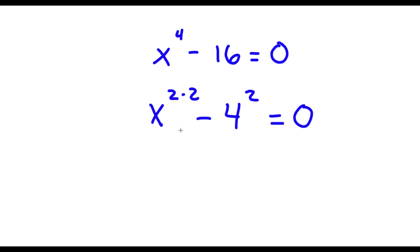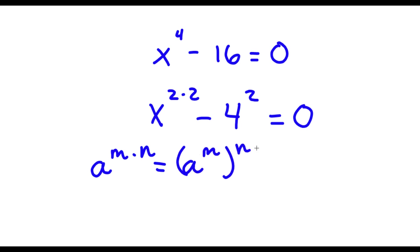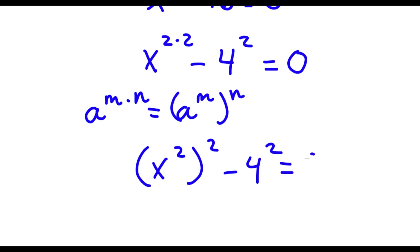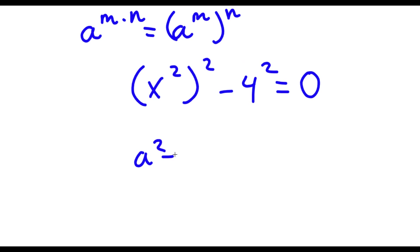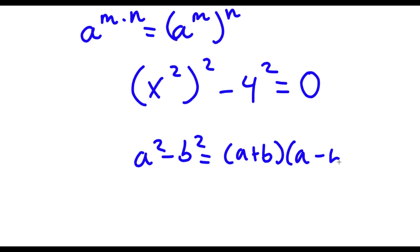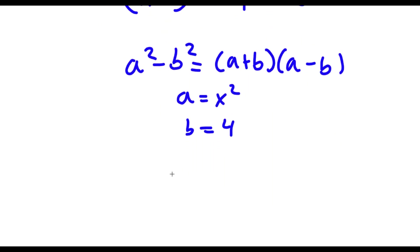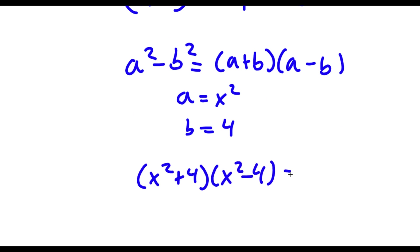So now, if I have something in the form a to the power of m times n, this is equal to a to the power of m to the power of n. So x to the power of 2 times 2, I'm going to write as x to the power of 2 to the power of 2, minus 4 to the power of 2 is equal to 0. Now, if I have something in the form a squared minus b squared, this is equal to a plus b times a minus b. So in this case, a is equal to x squared and b is equal to 4. So now I have x squared plus 4 times x squared minus 4 is equal to 0.